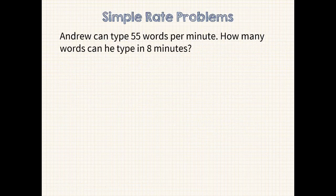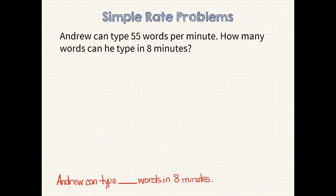I want to show you a couple of easy rate problems, then we'll be finished for this video. Andrew can type 55 words per minute. How many words can he type in 8 minutes? My sentence statement will be, Andrew can type blank words in 8 minutes. The important information is that he can type 55 words per minute. Rate problems look a little different with bar modeling, but they still make a whole lot of sense and give the problem solver a picture to follow in solving the problem. I'll start with what we know. We know that Andrew can type 55 words in 1 minute. That's pretty simple, isn't it?